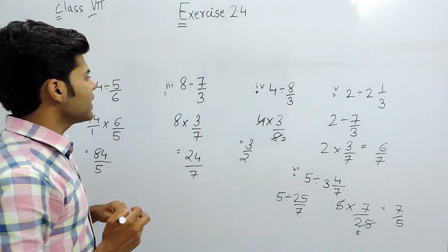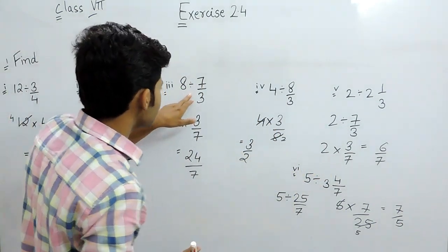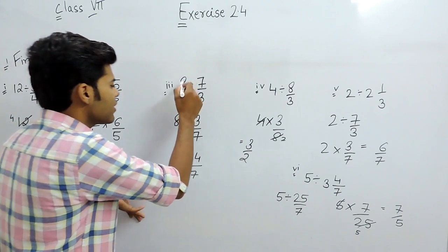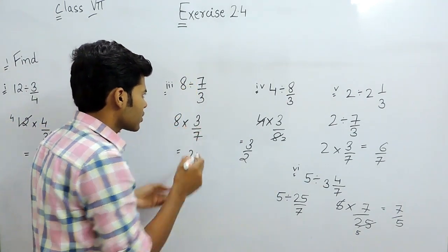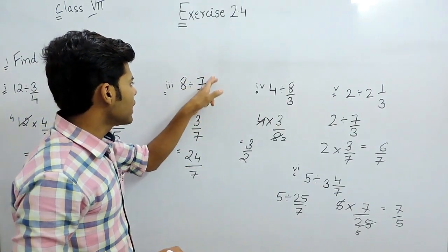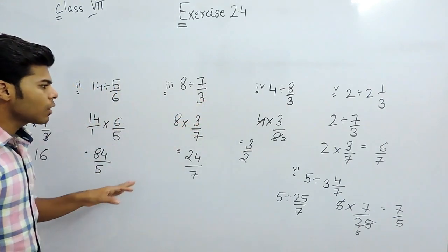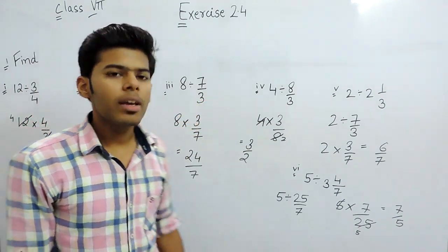So this is how you can solve these type of questions by simply changing the sign. Division will be converted into multiplication and then multiply it with the reciprocal, and this is the way to solve these type of questions. Thank you.